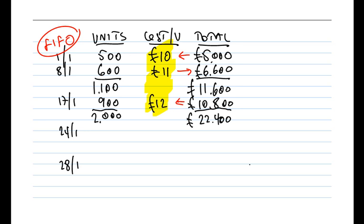On the 24th, we have a very different transaction — an issue of inventory. Reducing the units by 1,800, we'll now have 200 units remaining. We had 2,000, issued 1,800, leaving 200 units. That 200 units will be the same figure under FIFO, LIFO, and AVCO, because the difference between those methods is only in the amount we value the issue at. The number of units remaining is unaffected. So how are we going to value the 1,800 units being issued on the 24th of January under FIFO?